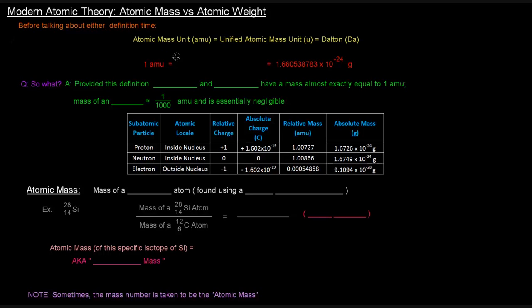Anyway, what is 1 AMU? 1 AMU is defined as one-twelfth of the mass of a carbon-12 atom, which happens to be equal to this mass in grams here. So this is an important definition that you should keep in mind.